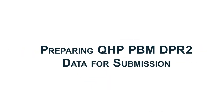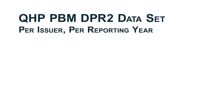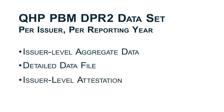Let's walk through preparing QHP PBM DPR-2 data for submission. Submitters submit a set of QHP PBM DPR-2 data per issuer associated with their PBM per reporting year. A set of data includes issuer-level aggregate data, which is submitted in the Health Insurance Oversight System, or HIOS, Pharmacy Benefit Manager Module User Interface, a detailed data file attachment, and an issuer-level attestation attachment.